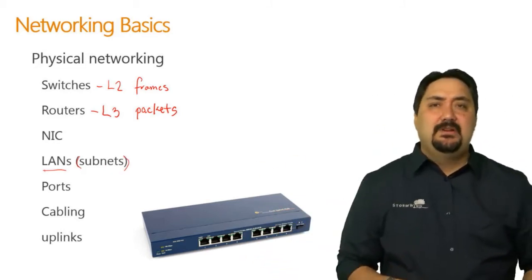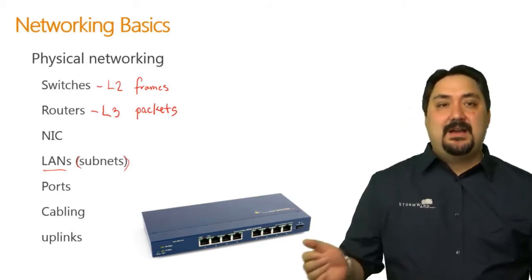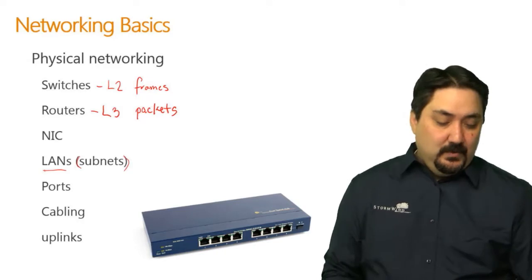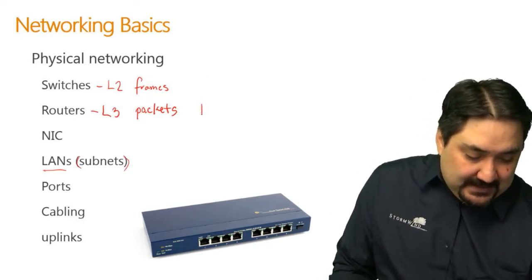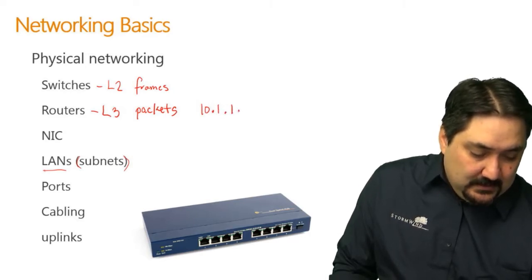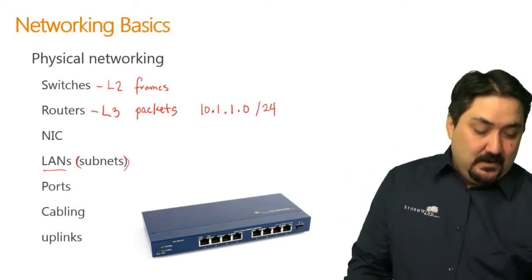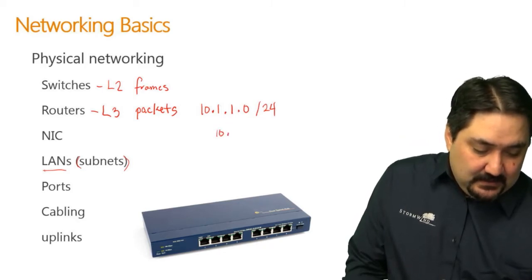Think of it this way. When you order a pizza, you've got to tell them your street and your house address. When we work with our routers, our routers have a subnet. Let's say we're on the 10.1.1.0 network — that's a slash 24. The slash 24 tells me the street. The street is 10.1.1.